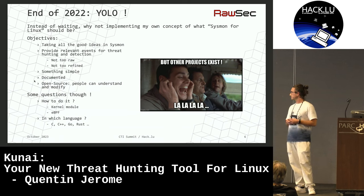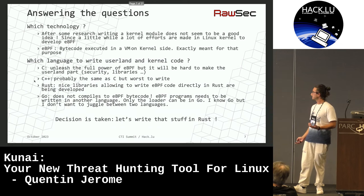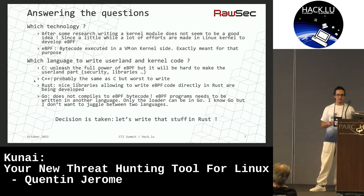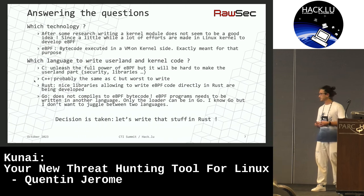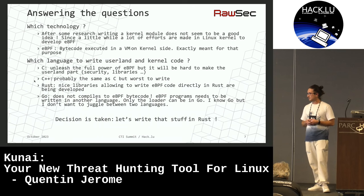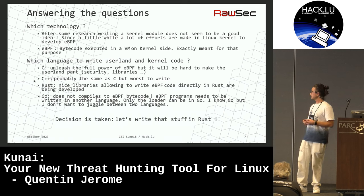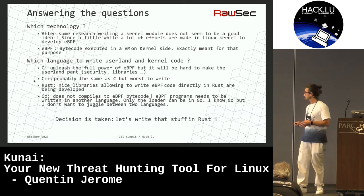To fulfill those objectives, I need to answer some questions: how to do it and in which language. In Linux you have two — maybe more — possibilities to develop kernel components. The first one is to develop a kernel module, but after a bit of research it seems to be a bit out of date and not recommended anymore. Because the Linux kernel developers are putting a lot of effort into developing the eBPF technology, which allows you to run some bytecode inside a VM on the kernel side, and this is exactly meant for that purpose. I will explain in a bit more detail what eBPF is in another slide.